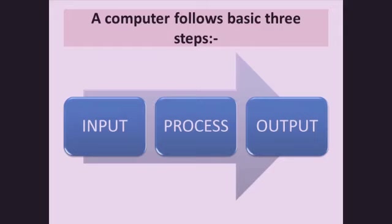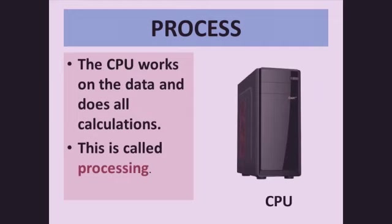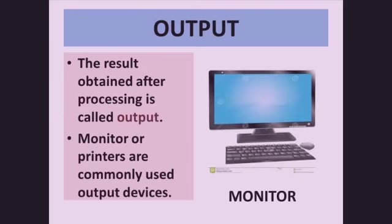Now let's learn the three basic steps of a computer. First is Input — keyboard and mouse are input devices by which we input data and give commands to the computer. Second is Process — CPU stands for Central Processing Unit, which takes all the commands we input as data and does all the calculations.